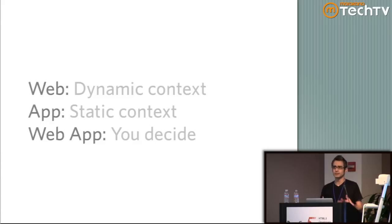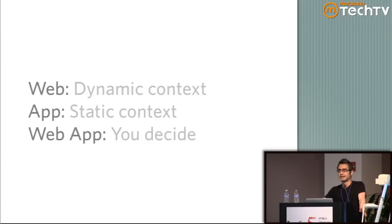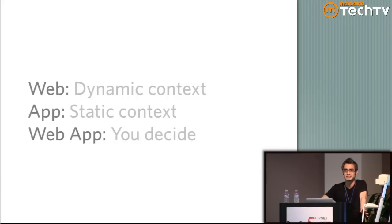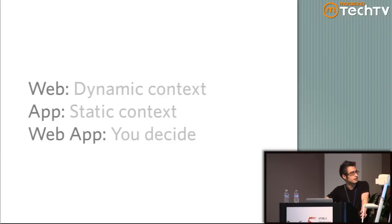Coming back to context — on the web, we have a completely dynamic context. Once you strip away that browser chrome, that whole rectangle in the middle is ours to play with. If you think back to Amazon ten years ago, we all made really ugly stuff all the time. There's not a person in this room who hasn't made an ugly website at some point. We had the freedom growing up with the web to do whatever we want — giant glossy orange buttons, we made giant glossy orange buttons.